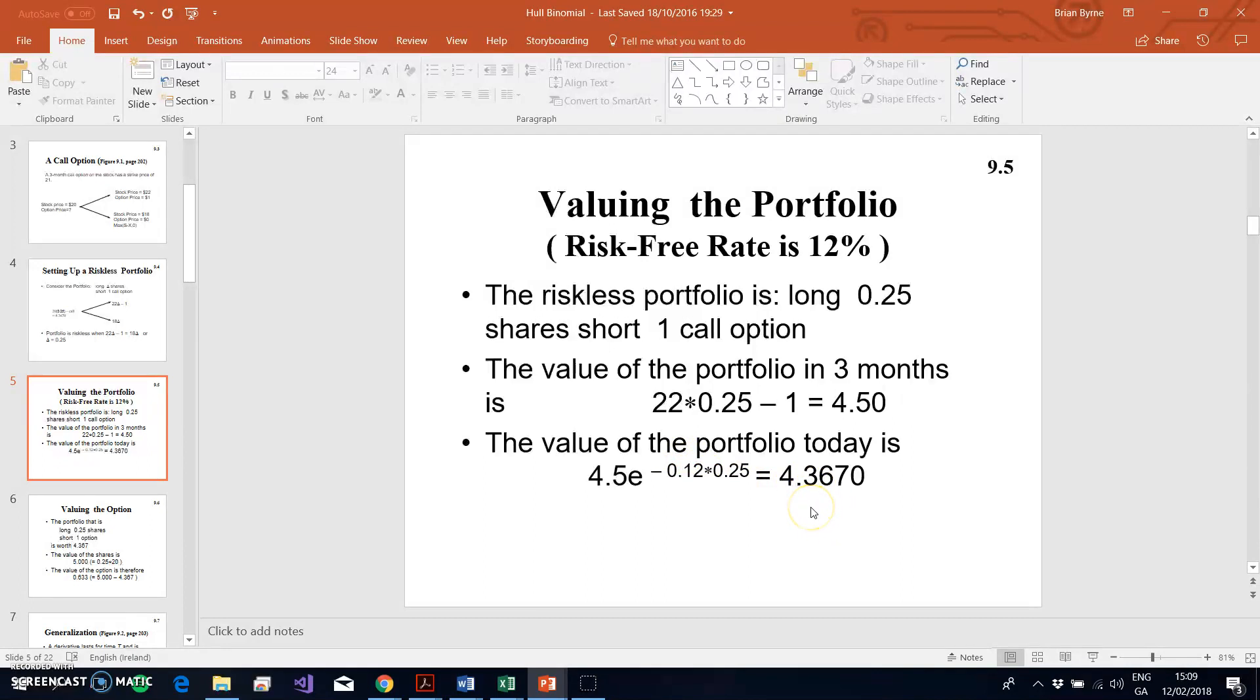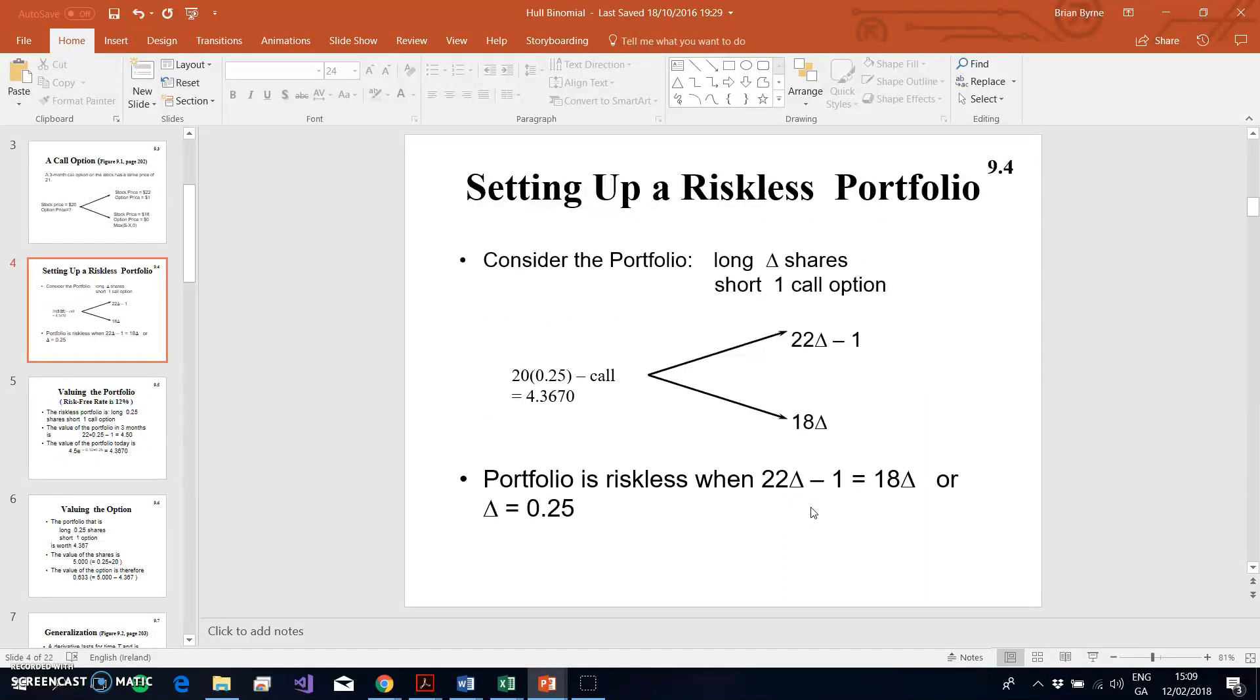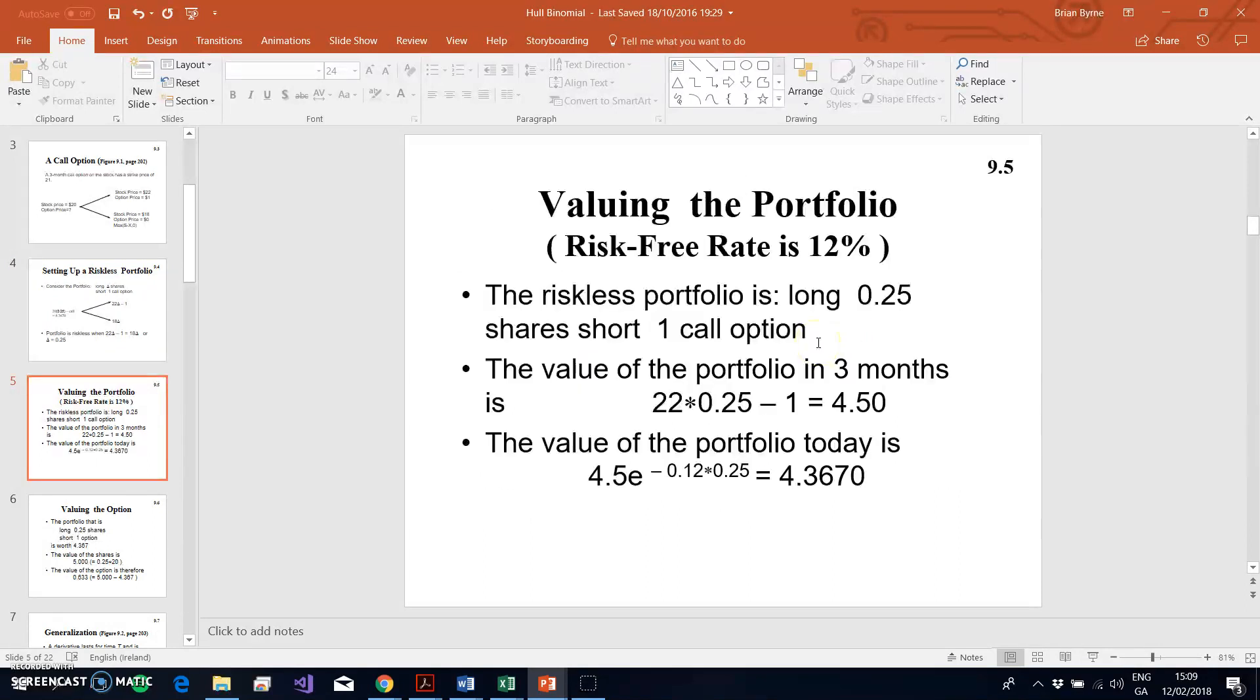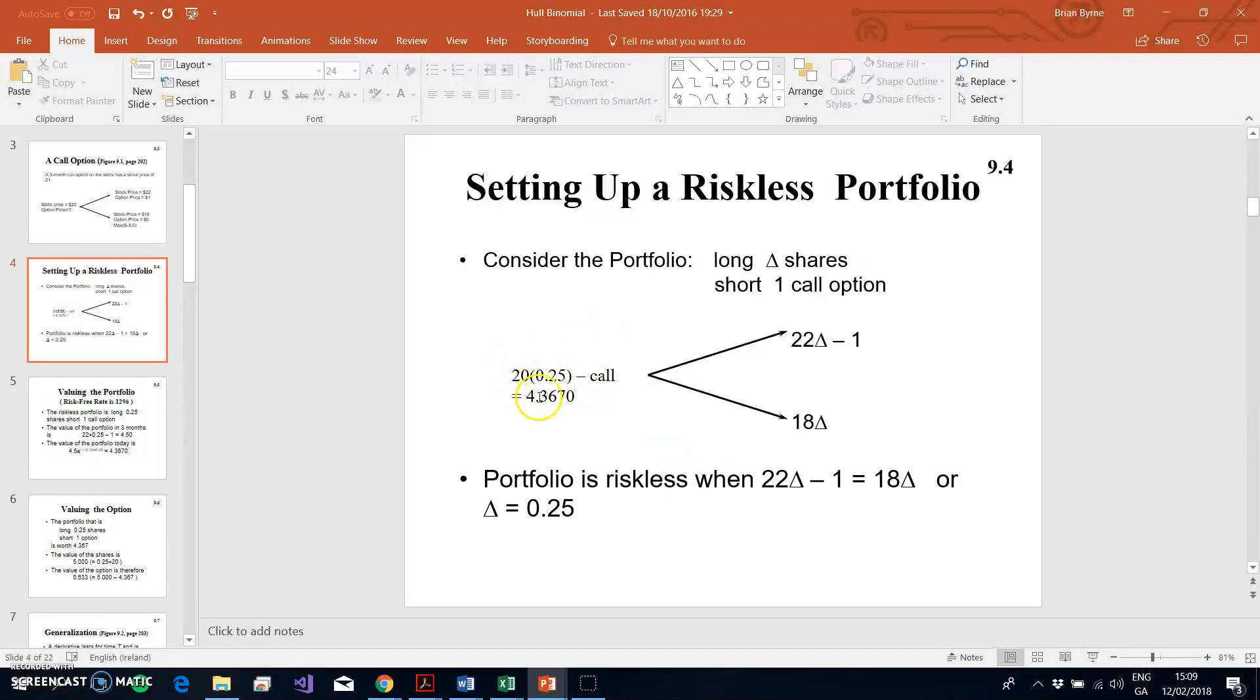The issue then is what's the value of the call option? We start off by saying if the portfolio is made up of a delta position in the stock and the value of the stock at the outset was 20, and the short position in the call, then the portfolio would be 20 times delta. We solve for delta here: 20 times delta minus that call. This portfolio when worked out we discover is 4.50 when discounted back three months. Its value is 4.367. That implies we can solve for the call by setting the 20 by the 0.25 minus the call equal to 4.36, and we get a value of the call equal to 0.633.